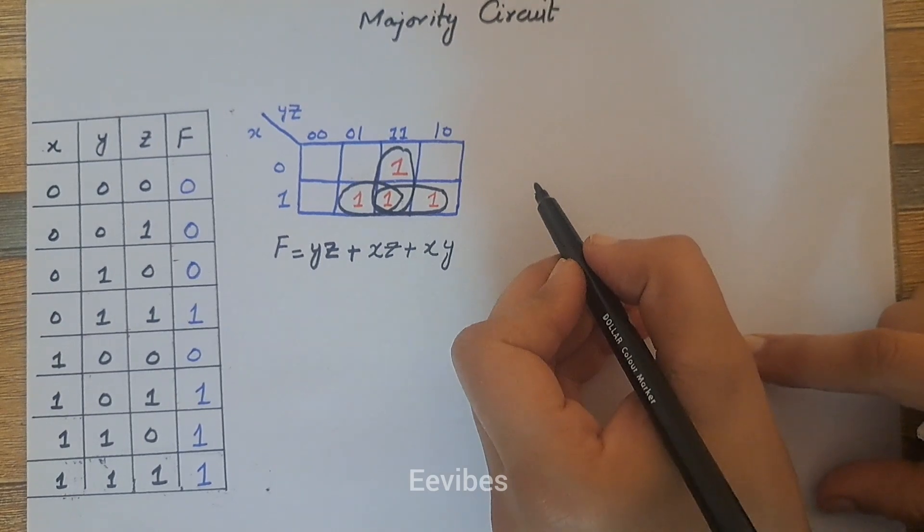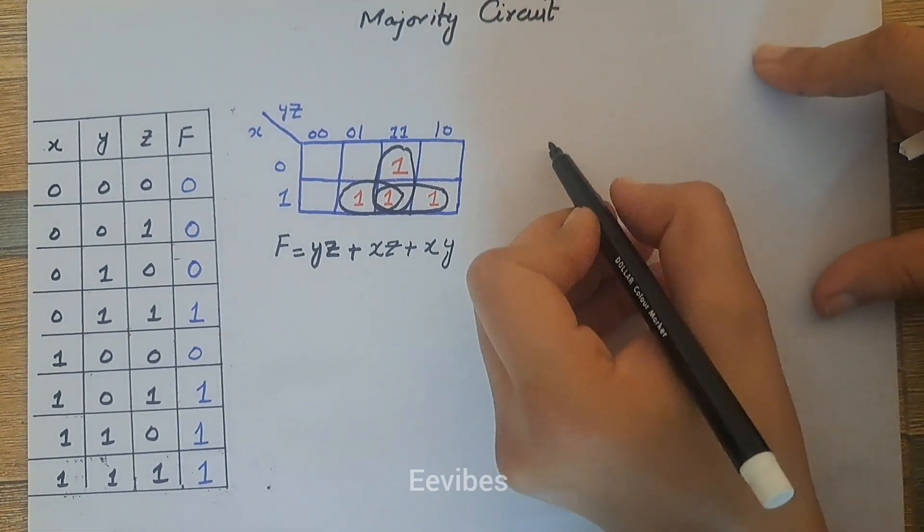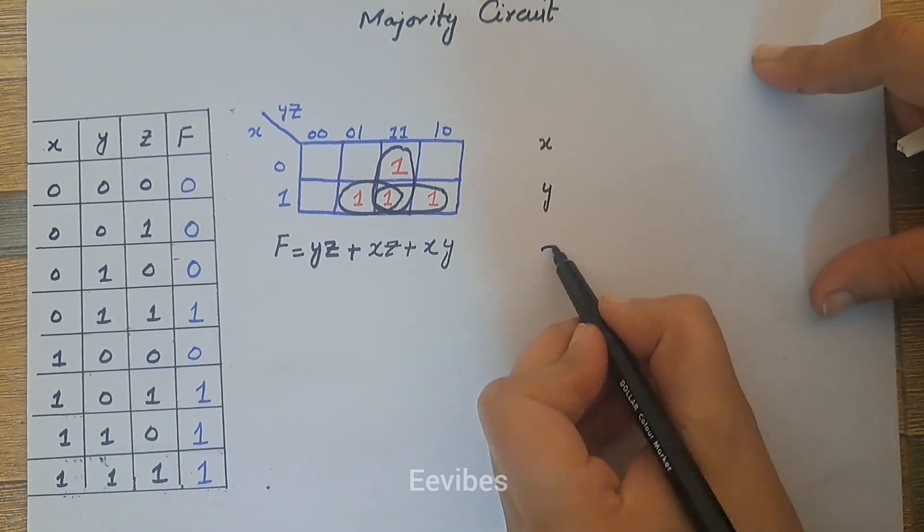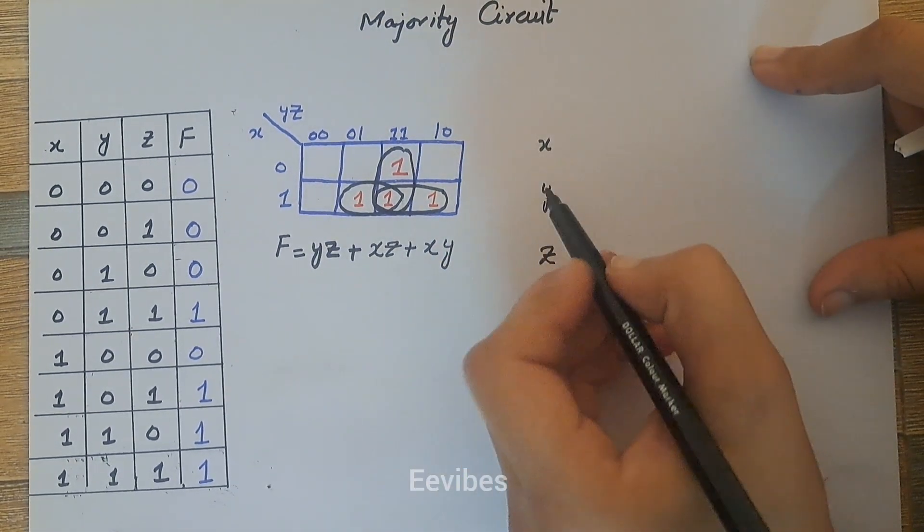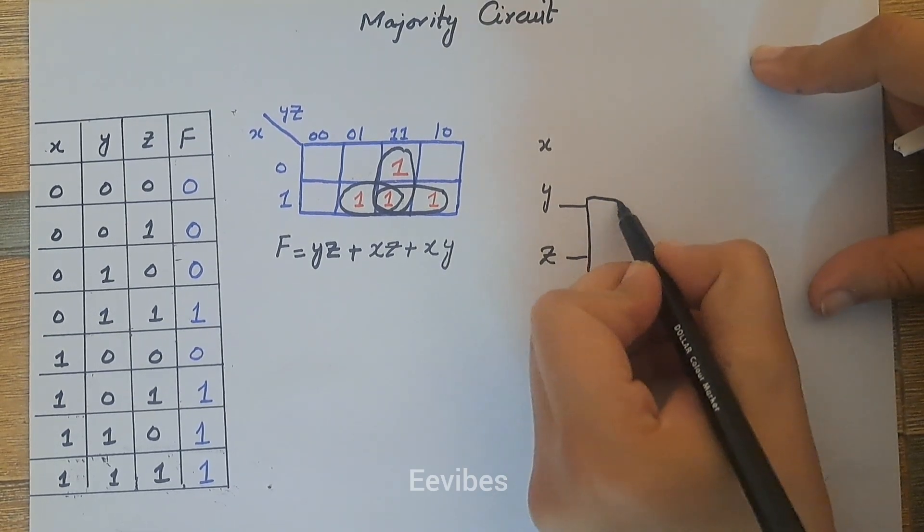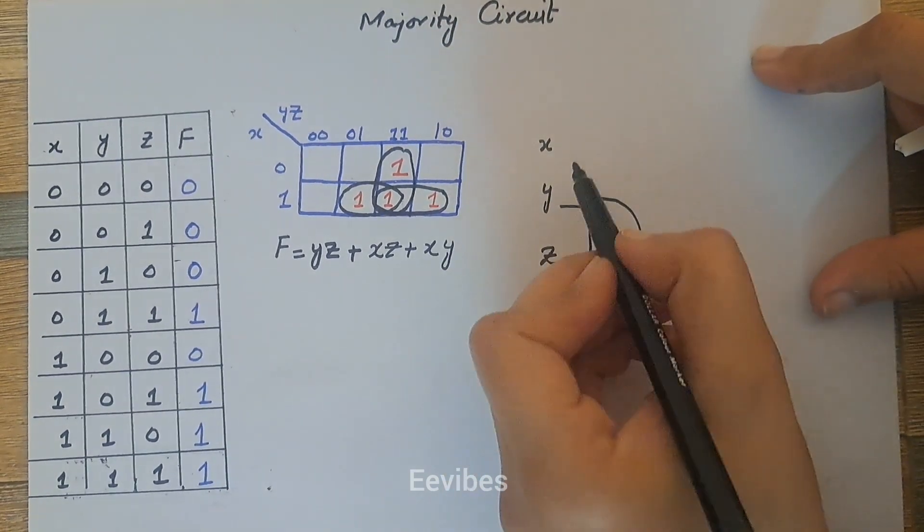The next step or the final step is to draw the combinational circuit for that. And what you need to do is you need to have three variables x, y, and z. First you need to AND y and z, so I will use an AND gate for that.